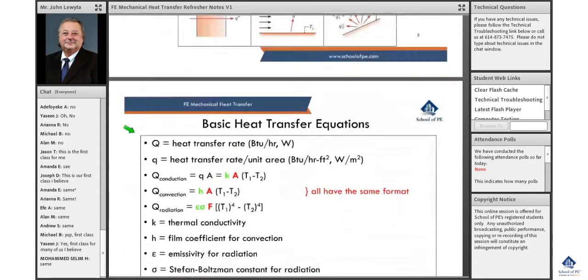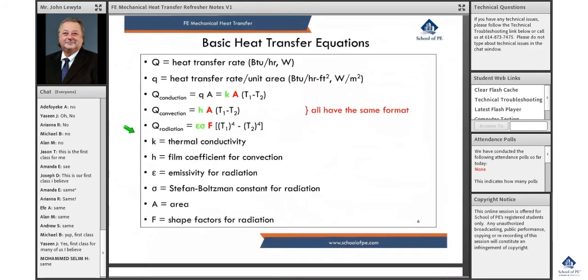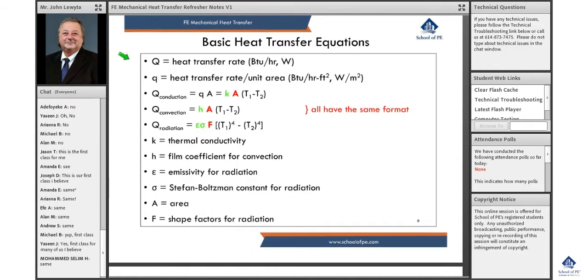Radiation is electromagnetic radiation based on temperature. Looking at the basic heat transfer equations, you have Q—heat transfer rate. Big Q versus little q: big Q is in BTUs per hour or watts, while little q is heat transfer rate per unit area. You can always tell by the units. When you take the exam, make sure you pay attention to what they're asking for.